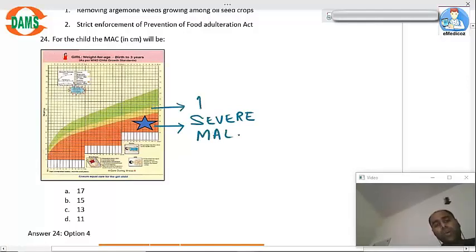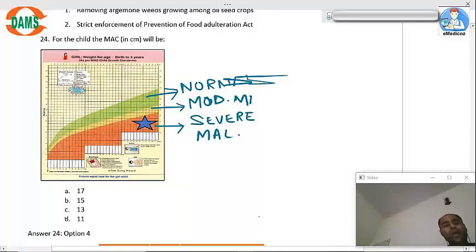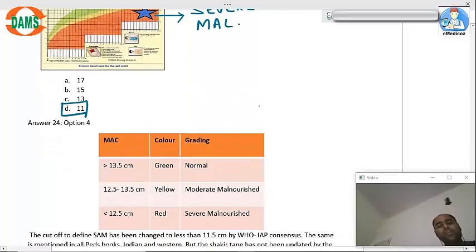Yellow is moderate malnutrition. Green, normal. So answer is option number 4. Yes, so more than 13.5 normal, 12.5 to 13.5 moderate, less than 12.5 severe.